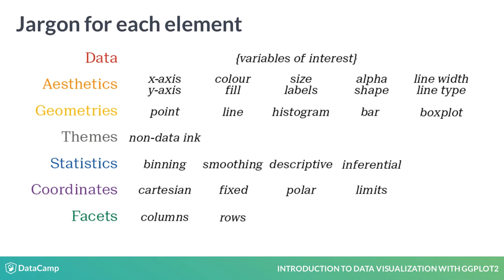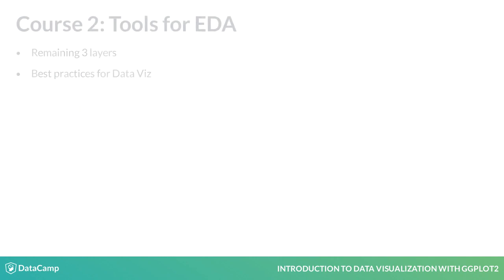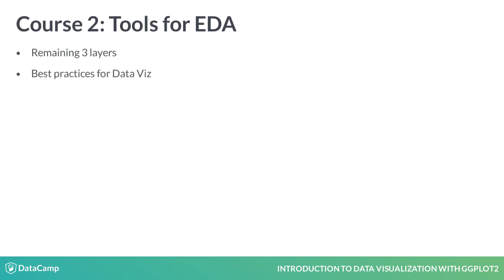This diagram gives an example of some of the terms we'll encounter in each element. Whenever we make a plot, we are choosing among these options and many others not displayed. By the end of the course, you'll be able to generate meaningful and publication-quality exploratory plots using the first four layers. Once we've covered the remaining three layers in the second course, you'll be using DataViz as a tool for exploratory data analysis.